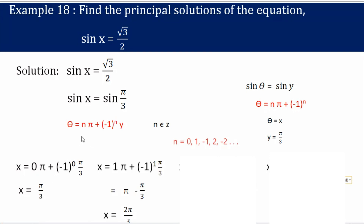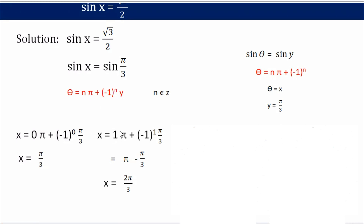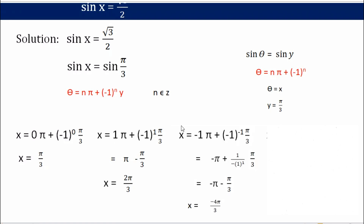Now for n = 1: x = 1·π + (−1)^1 · π/3 = π − π/3 = 2π/3. Since π/3 is 60°, 2π/3 is 120°. As 120° is greater than 0° and less than 360°, this is a valid solution.